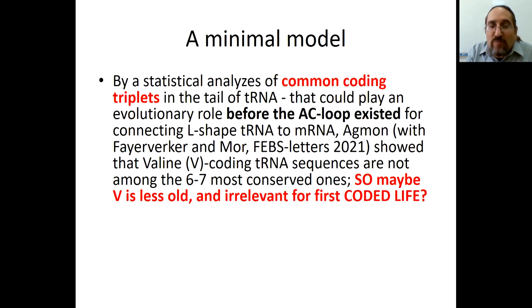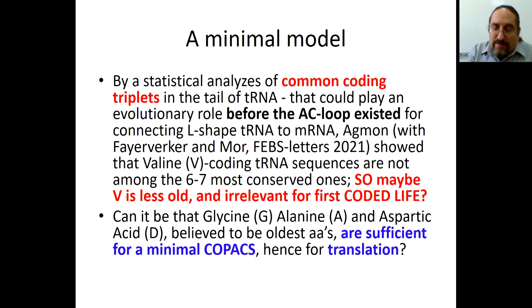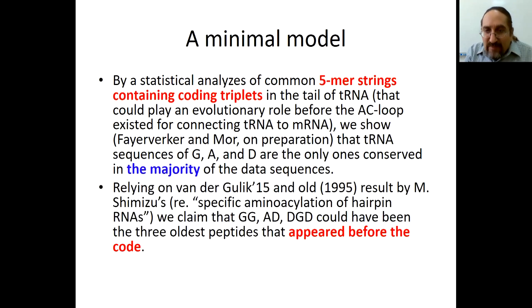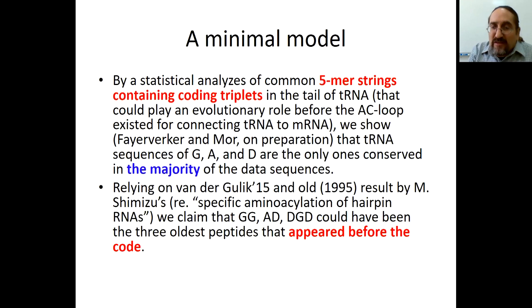Recently, with Ilana Agmon, we showed that valine is potentially not as old an amino acid as threonine, glycine, alanine, and aspartic acid. Later, only with Itai Feuerwerker, we showed — by looking at five-mer strings containing coding triplets in the tail of tRNA — that without valine, glycine, alanine, and aspartic acid could be the oldest amino acids.